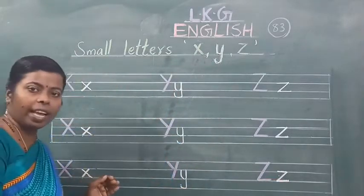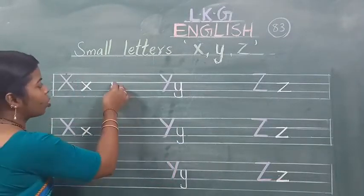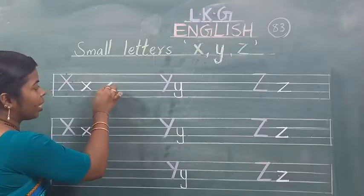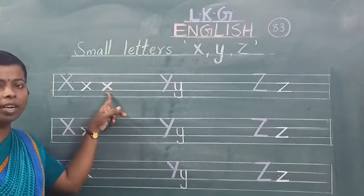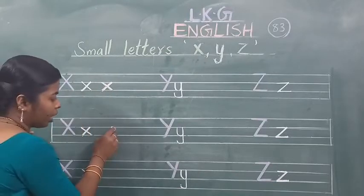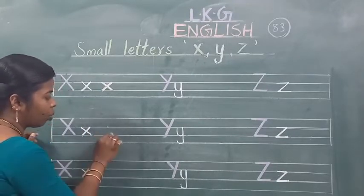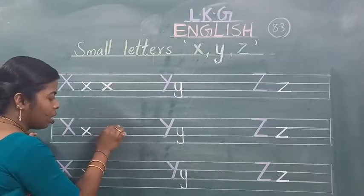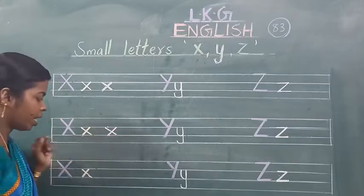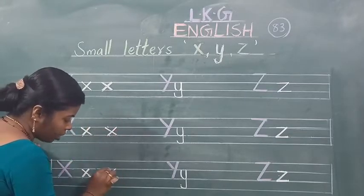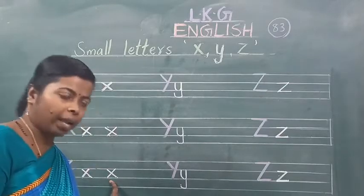Once again we will write. Small letter X kaisa likhna hai? Slanting line, again slanting line. In dono line mein mila ke likhna hai. This is small letter X.